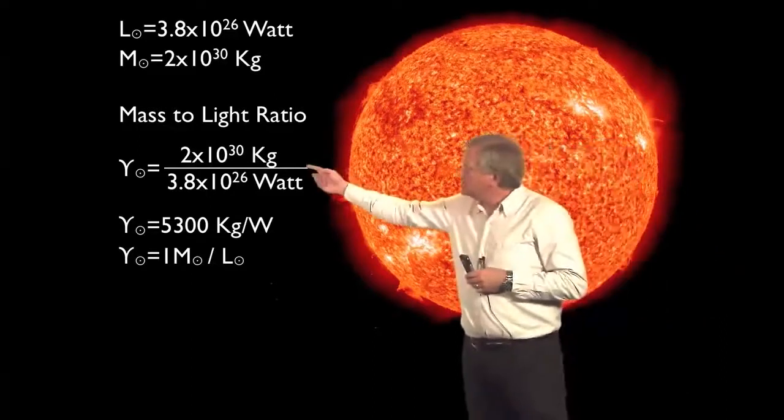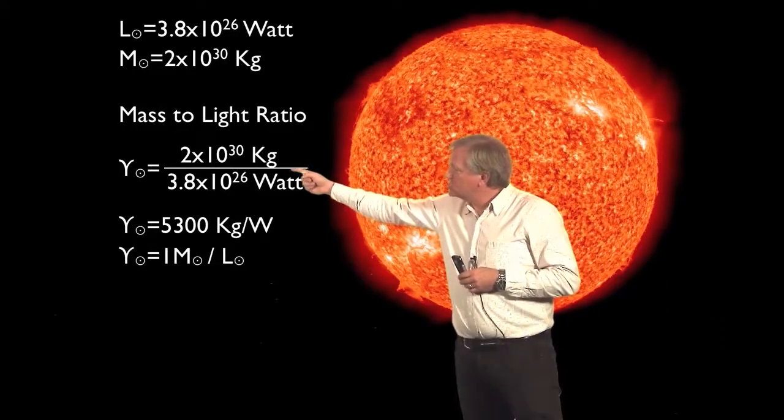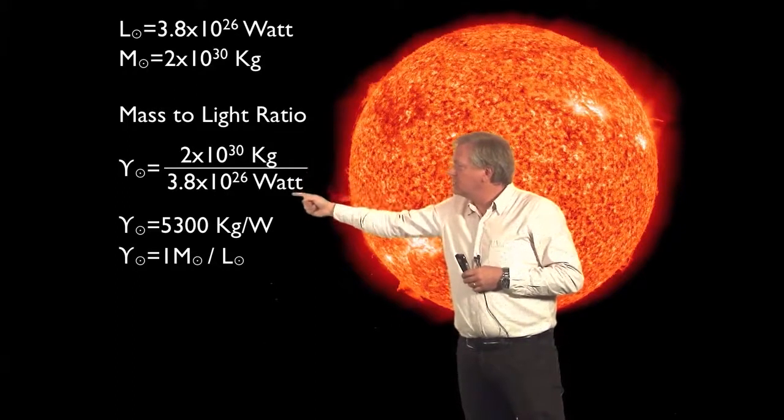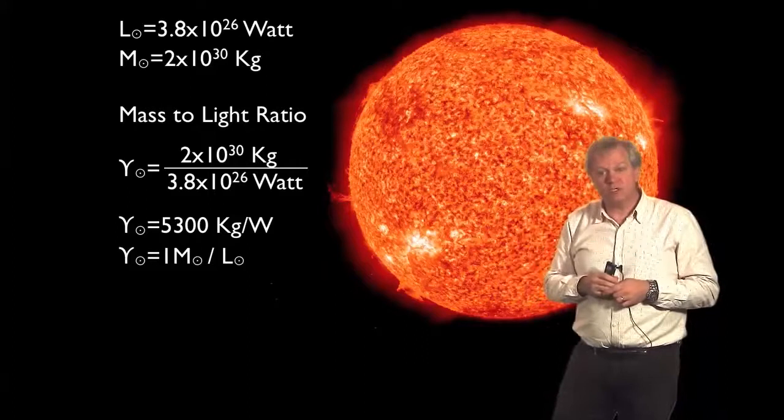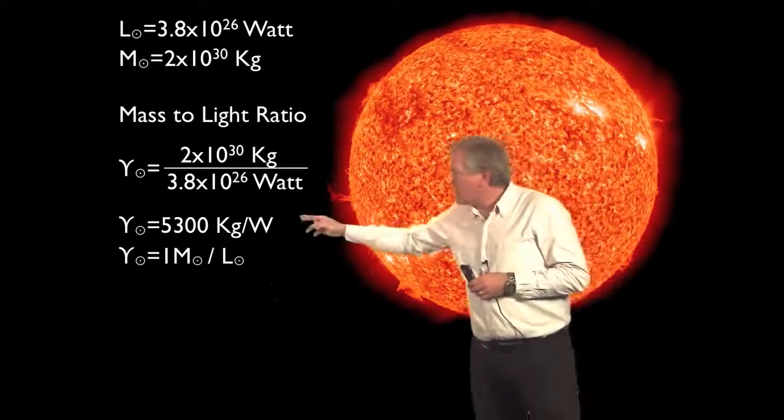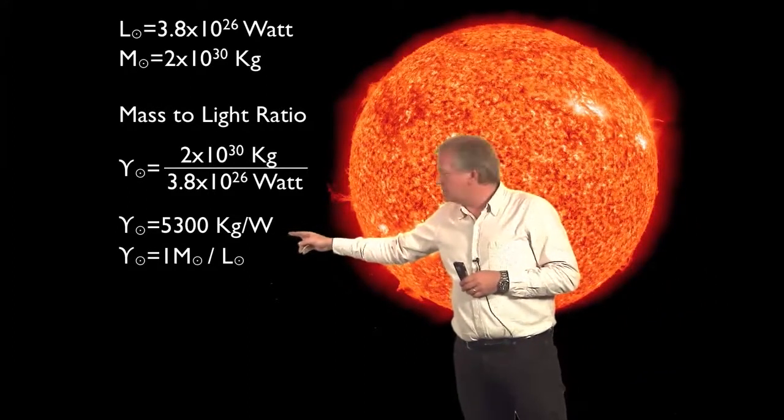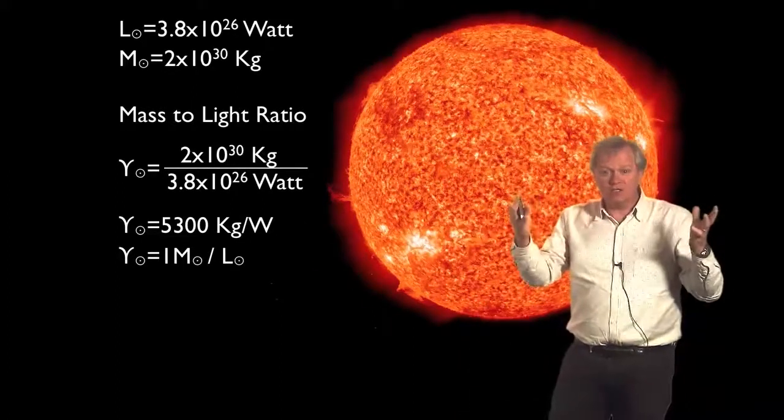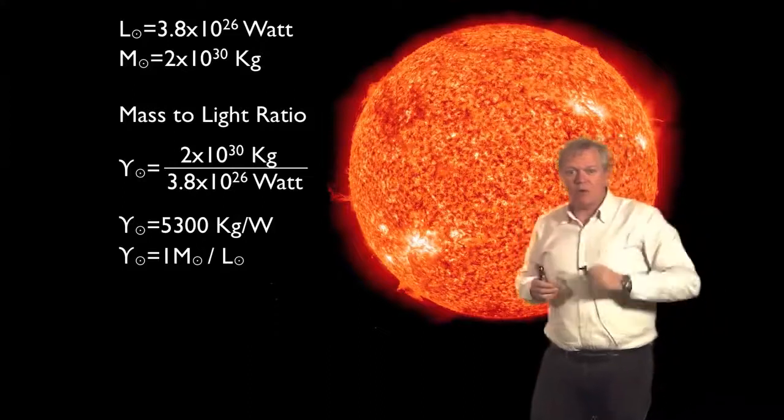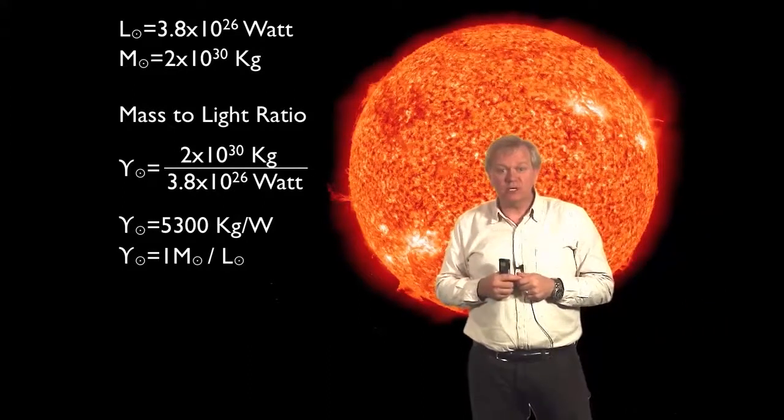So for the sun, that ratio is 2 times 10 to the 30 kilograms divided by 3.8 times 10 to the 26 watts, or about 5,300 kilograms per watt. That would mean wherever I saw a watt of starlight in a galaxy, I would know I would have 5,300 kilograms.